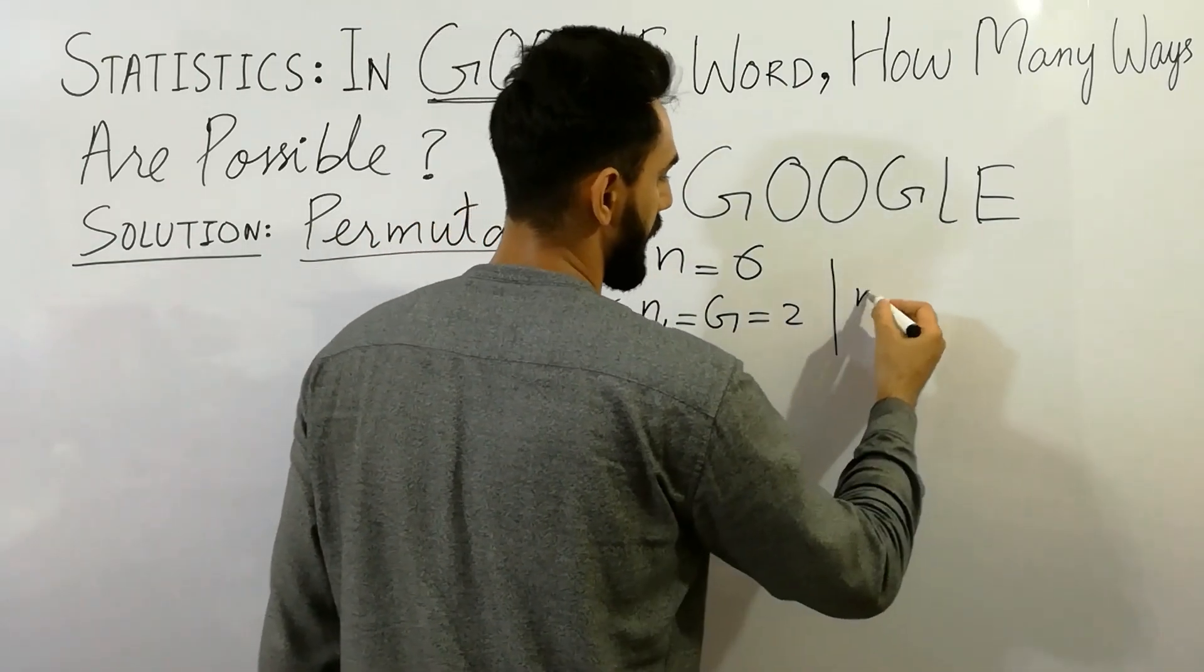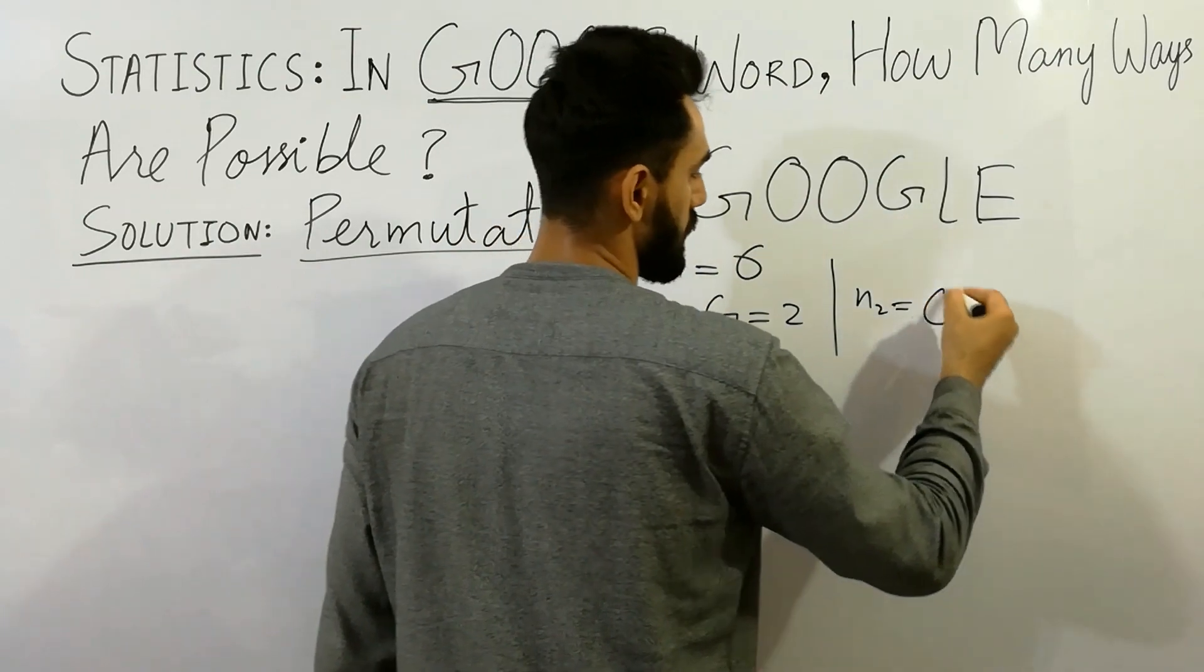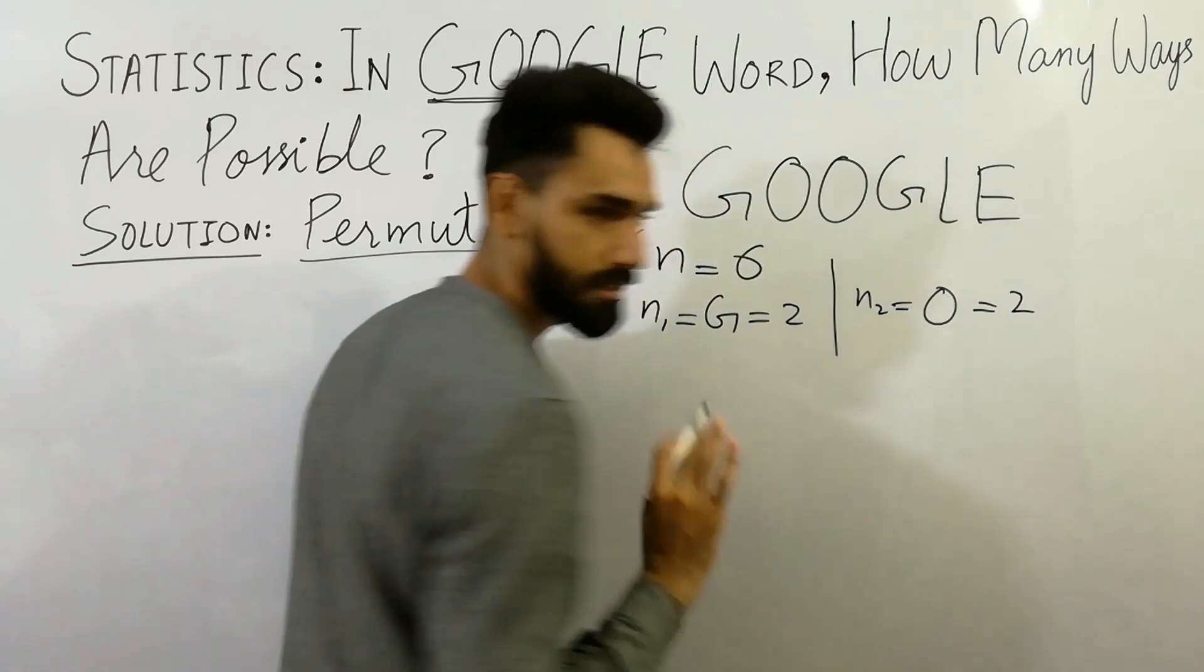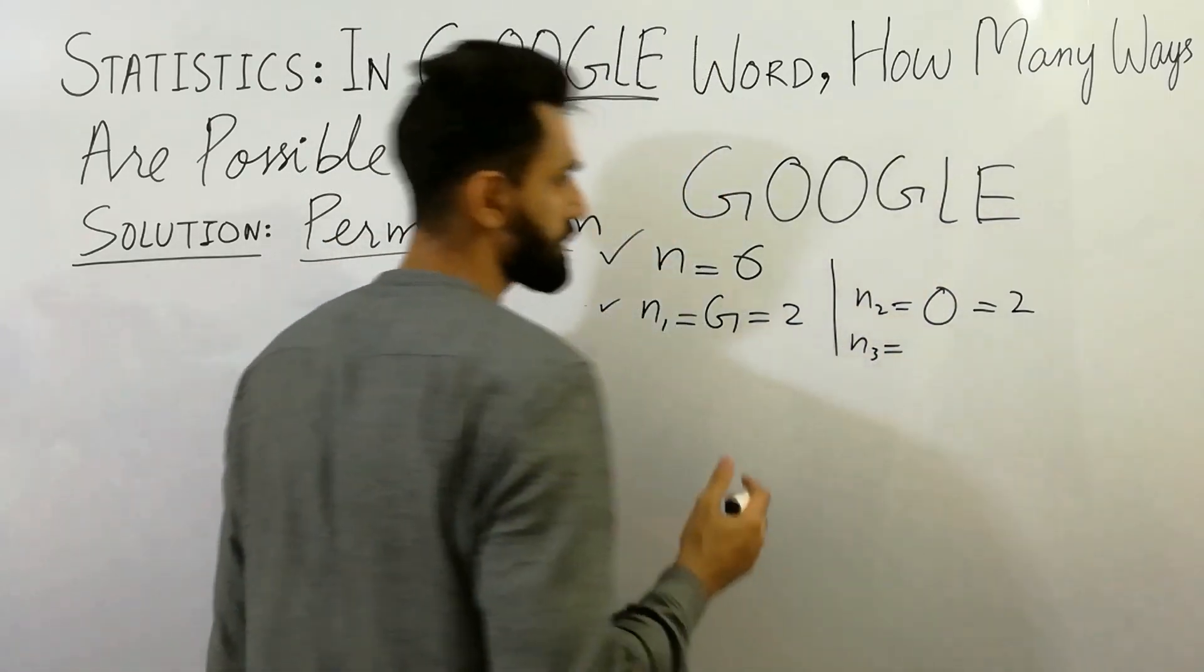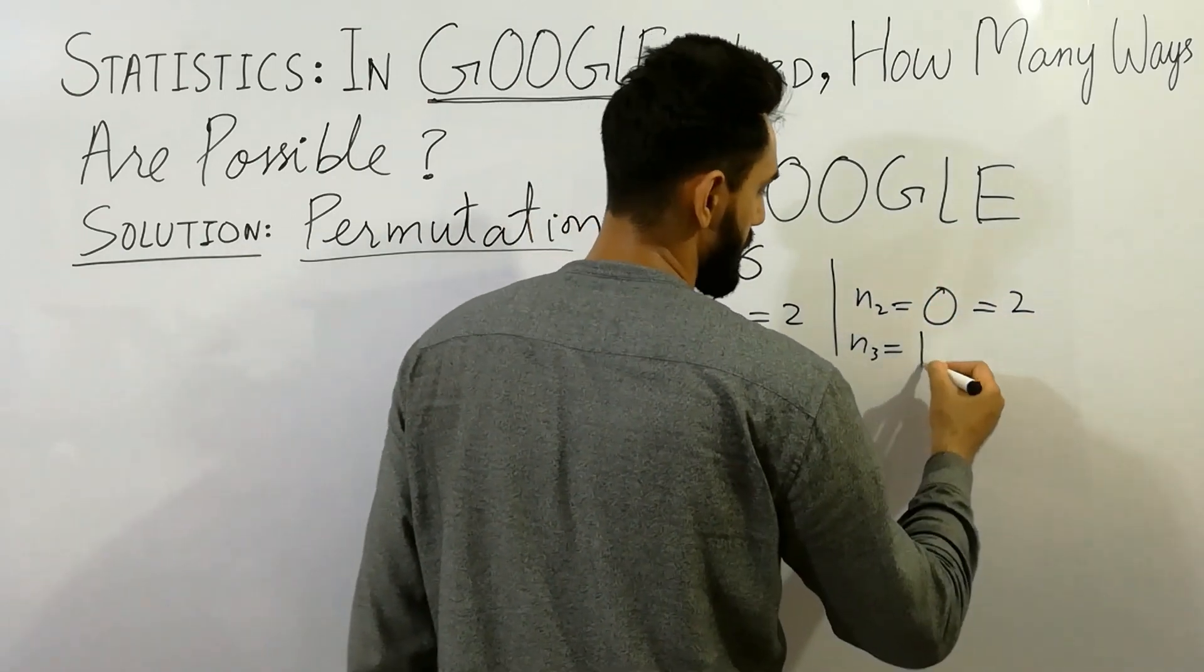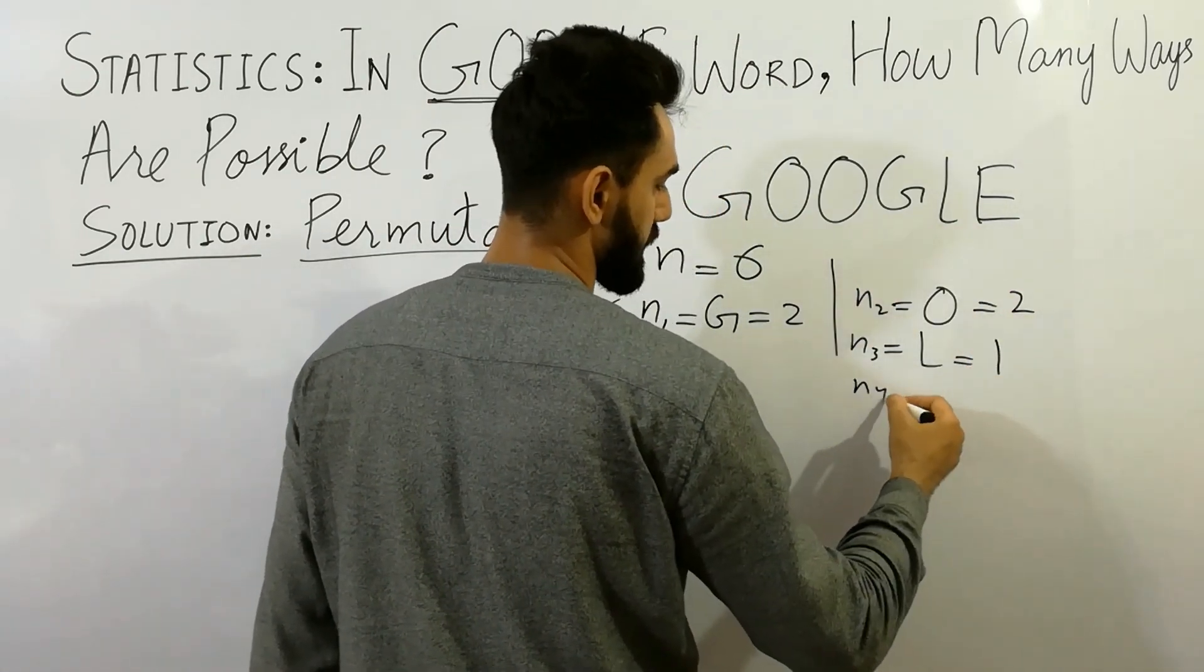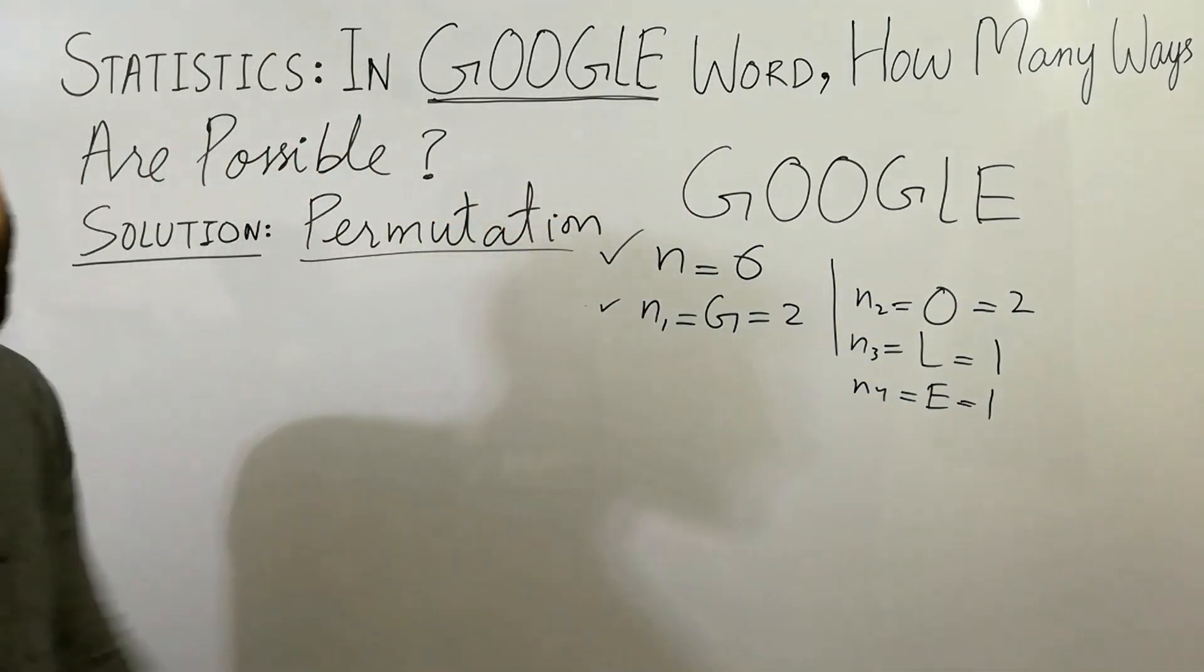Next step, N2. N2 will be, let's suppose that this is O. The number of values are here: 1 and 2, so put 2. Next step is N3. N3, you can take it as L. L is N3, L is 1, so write here 1. And similarly, N4 is E, so write here 1. I hope that you have cleared the point.